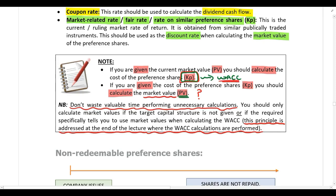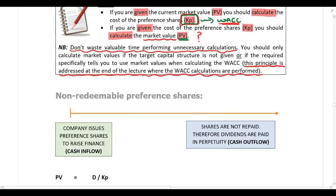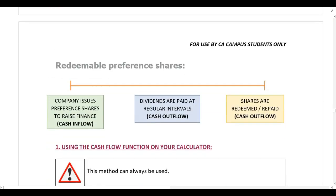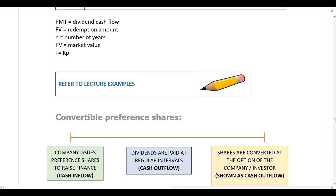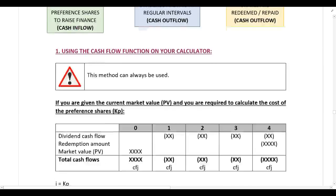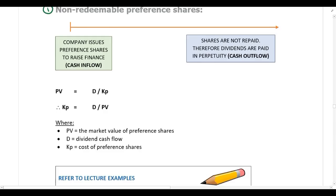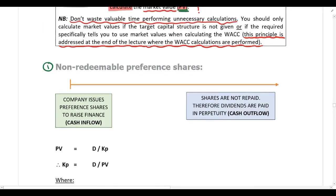Upfront in questions you are going to have to determine what type of preference share you are dealing with, because your calculation is going to depend on the type of preference share. Either it is going to be a non-redeemable preference share, or it is a redeemable preference share, or lastly it is a convertible preference share. When you read through the information provided in the question, first identify what type of preference share you are dealing with.